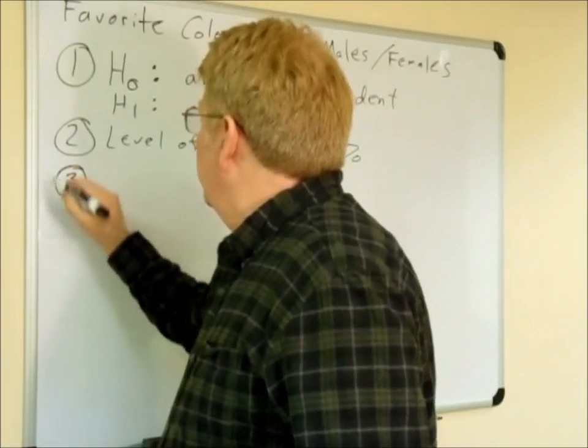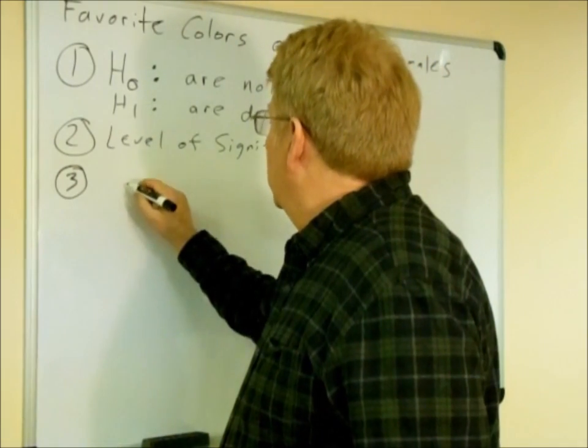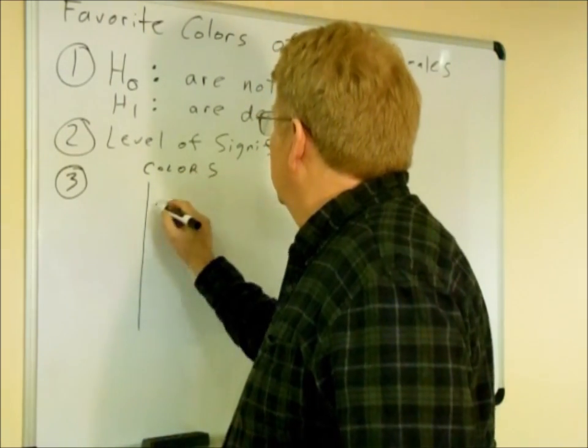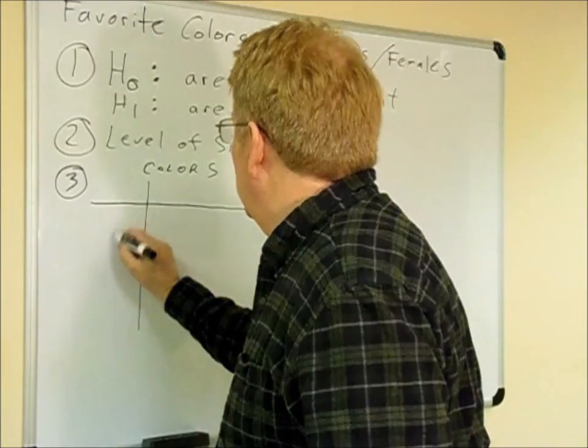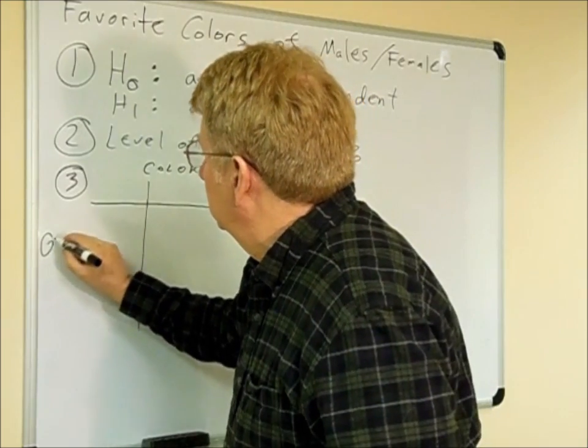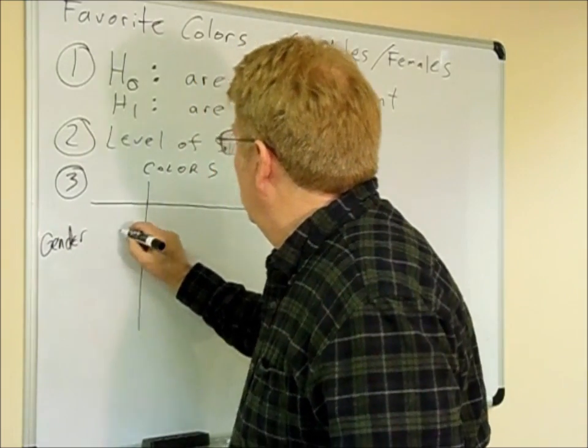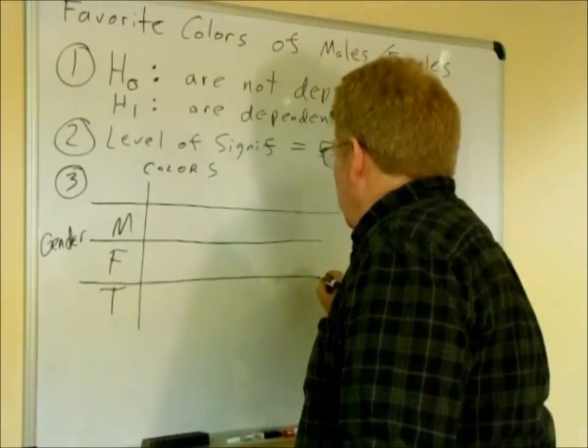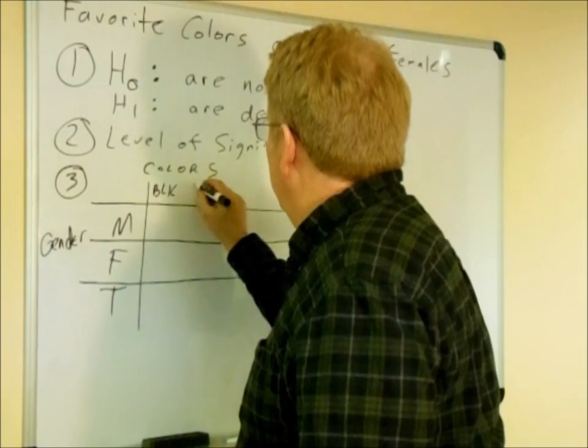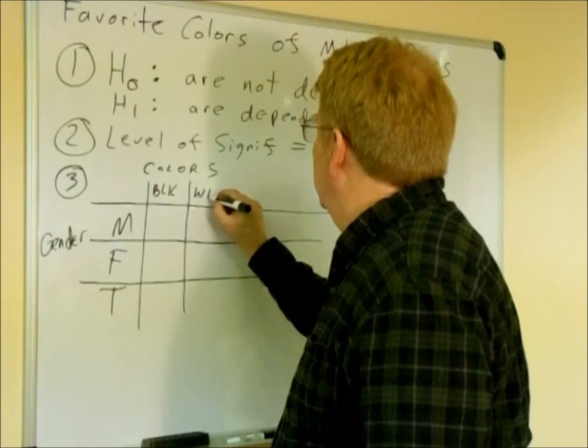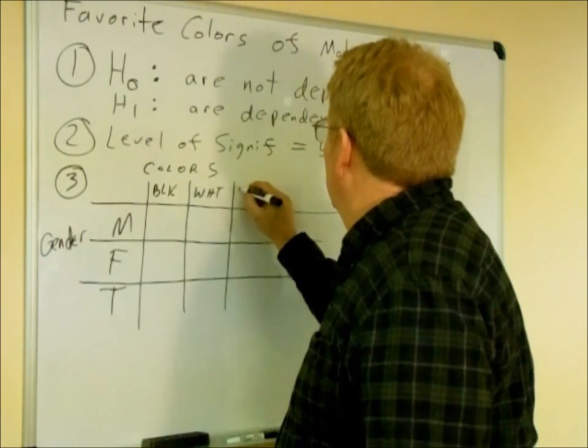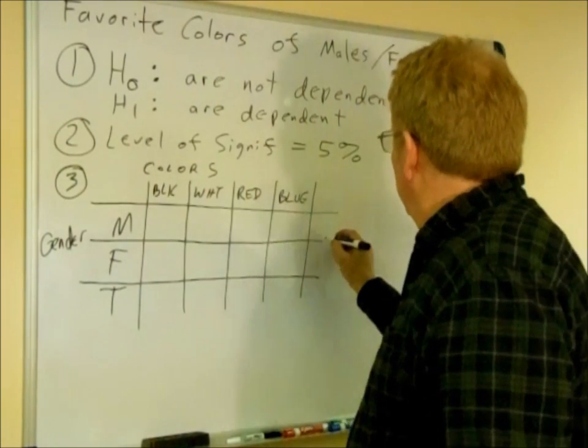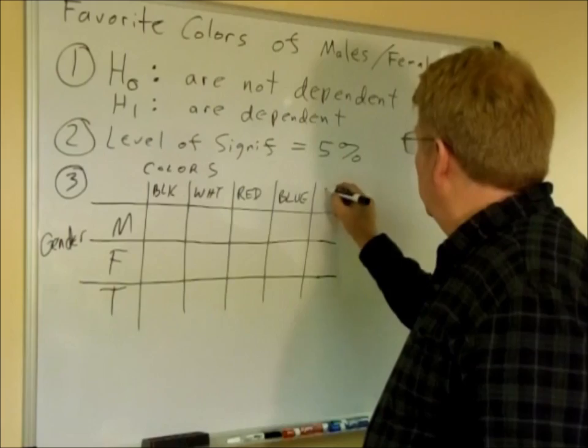The third thing we're going to do is we're going to construct a contingency table. And for this, we're going to have colors. And down here we're going to have the gender. So we'll say male, female, and total. Here we'll have black, white, red, blue. And over here we'll have total.